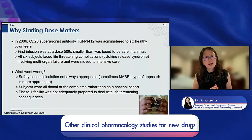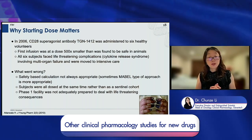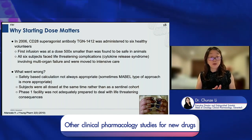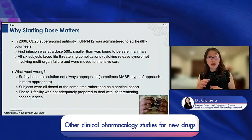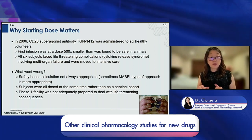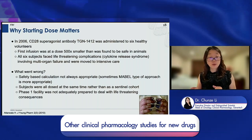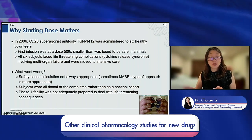Regarding why starting dose matters — you probably know the TGN1412 story in 2006. This CD28 super-agonist antibody was administered to six healthy volunteers. The first infusion used a 500-fold safety scaling factor from GLP tox data in monkeys — much more conservative than the typical tenfold. But still, all six subjects faced life-threatening complications: cytokine release syndrome involving multiple organ failures. The patients began to lose their toes and fingers and had to be moved to intensive care.